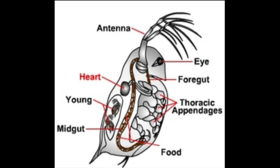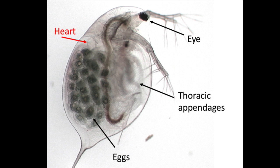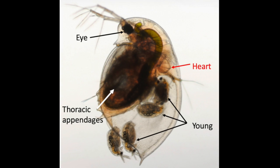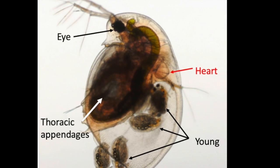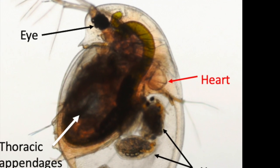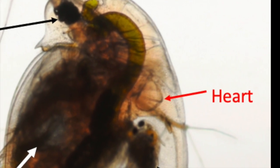One of the really nice things about Daphnia is that they're transparent and you can see their internal organs. You can see the eggs in the female, but you can also see the heart, and that's what we're going to be focusing on mostly today. It might be easy to get distracted by the really cool eggs below the heart or the rapidly beating thoracic appendages in front of the heart, but try to keep all your attention on the beating of the heart.